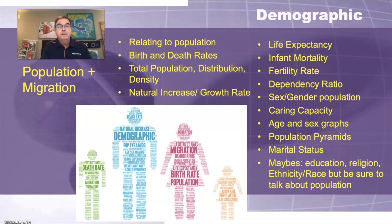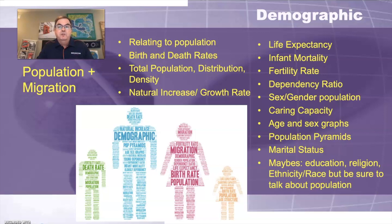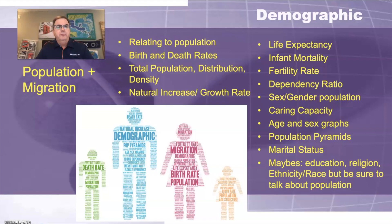Life expectancy is basically a mortality statistic — how long is a person expected to live — and you can look at male versus female life expectancy. Infant mortality rates and fertility rates — the number of babies a woman is likely to have in her lifetime. Dependency ratio: both the elderly dependency ratio and the youth dependency ratio. Be specific — over 65 or under age 15. Sex and gender of the population, male versus female. Carrying capacity — how many people can a society hold — Malthus talks about that. Age and sex graphs, also called population pyramids. Marital status is demographic as well.